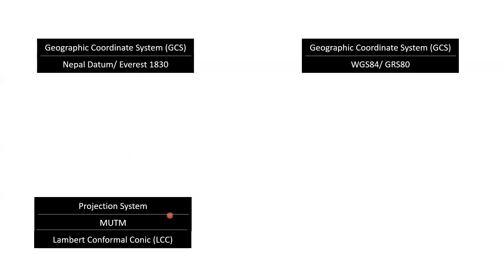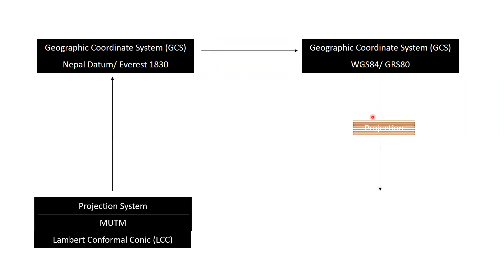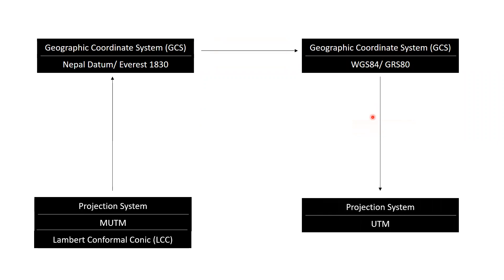Let's say we have our GIS data either in MUTM or LCC system, and that means the GCS associated with either the MUTM system or LCC system is Nepal Datum. If we want to transform those data from a local datum into a global datum and then into a UTM system, we use a transformation model that takes us from local data to global data and then performs the projection into a MUTM system.